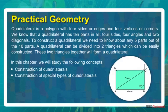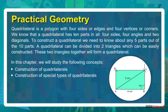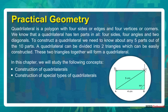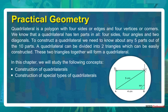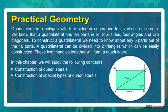A quadrilateral is a polygon with four sides or edges and four vertices or corners. We know that a quadrilateral has ten parts in all: four sides, four angles, and two diagonals. To construct a quadrilateral, we need to know about any five parts out of the ten. A quadrilateral can be divided into two triangles which can be easily constructed.